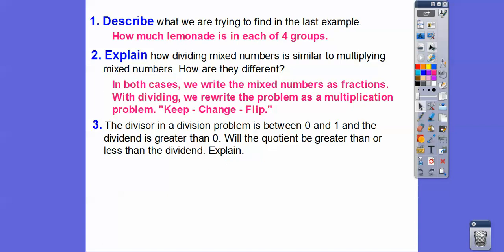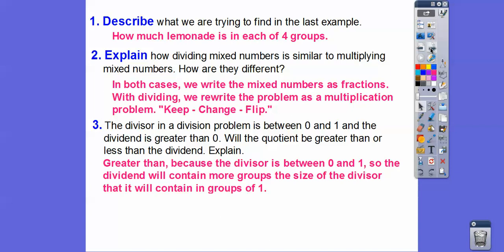The last part: if the divisor in a division problem is between 0 and 1 and the dividend is greater than 0, will the quotient be greater than or less than the dividend? It's always going to be greater than — as long as our divisor is between 0 and 1, like a fraction. Because when the divisor is between 0 and 1, the dividend will contain more groups the size of the divisor than it will in groups of 1. Here's an example: 1 half is a nice example, and 6 divided by 1 half is 12. The quotient is going to be bigger than the dividend when the divisor is between 0 and 1.